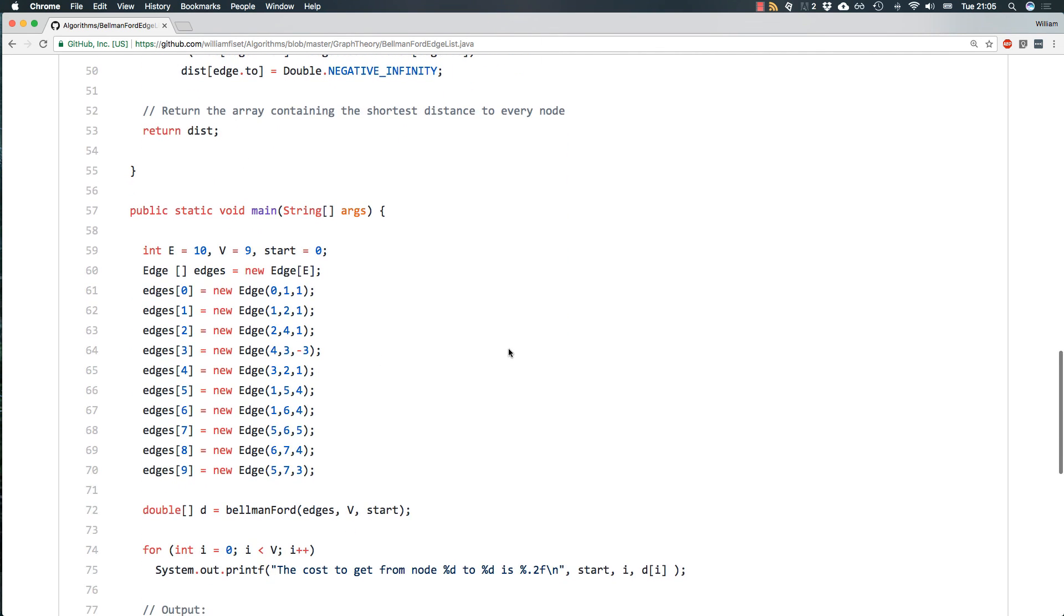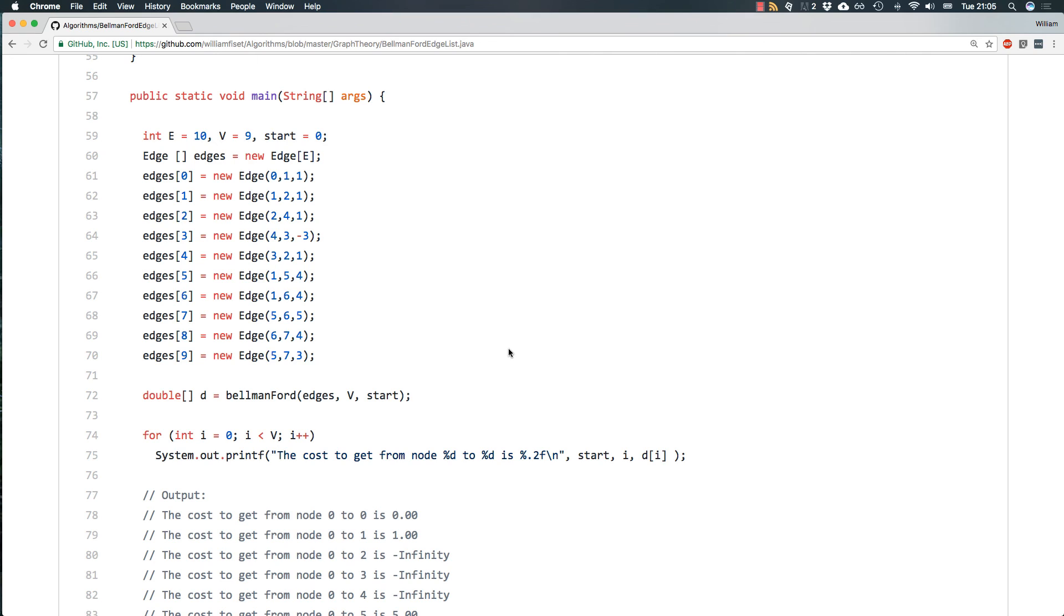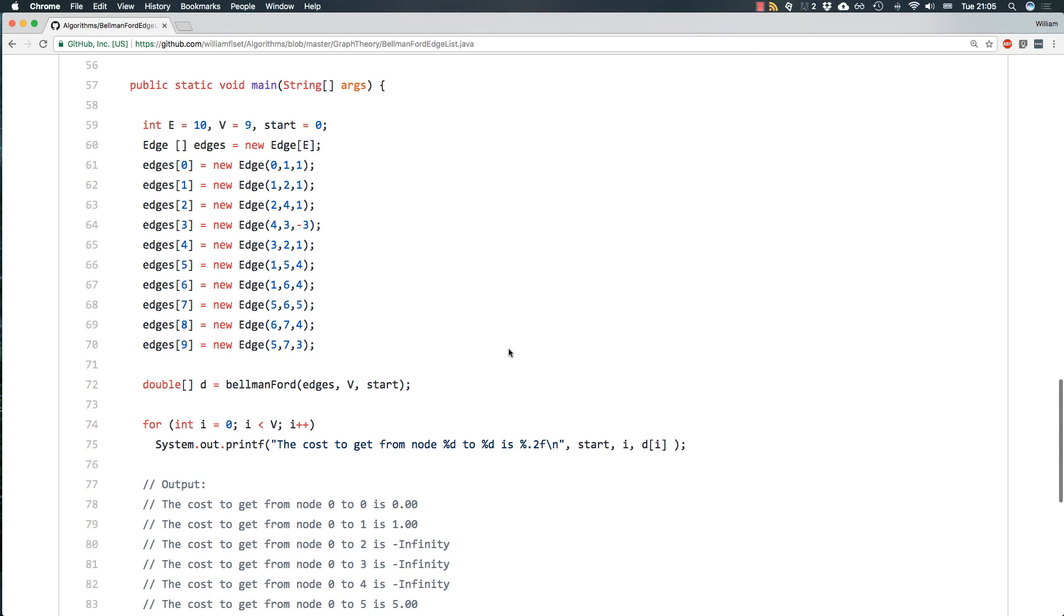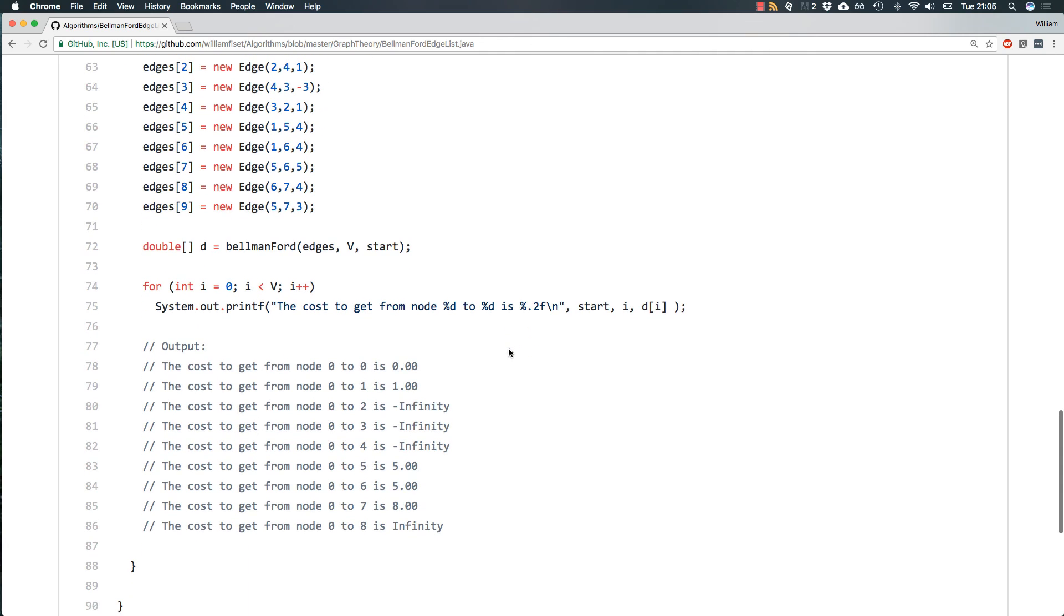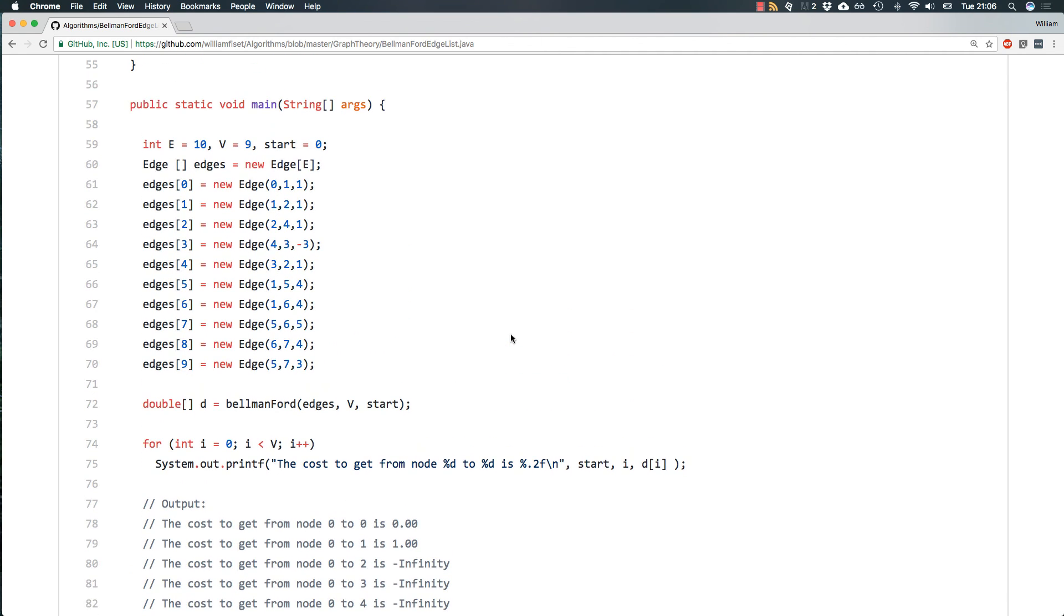And that's the entire algorithm and we just return the distance array. And if you look in the main method, it shows you how to actually create a graph, add some edges, and then run Bellman-Ford and find the distance from a starting node to all other nodes in the graph. And that is Bellman-Ford. Guys, thank you for watching, and please leave your comments in the description below. I'll catch you next time.